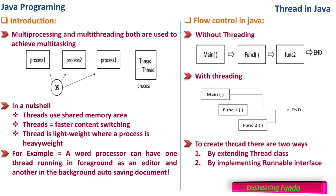To create a thread in a Java program, there are two ways: first is by extending the thread class, and second is by implementing the runnable interface. Both have their own advantages and disadvantages that we will see with an example.